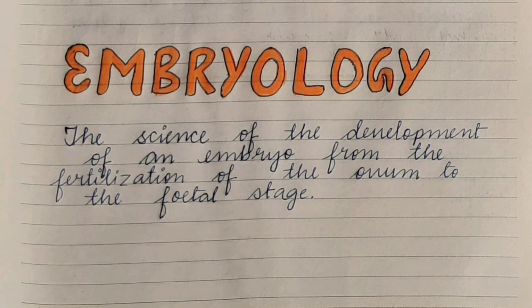Next is embryology. It is the science of the development of an embryo from the fertilization of the ovum to the fetal stage. Due to the fusion of gametes, a zygote is formed, which gradually develops into an embryo. So embryology includes everything related to the development of an embryo, from fertilization of the ovum to the fetal stage.